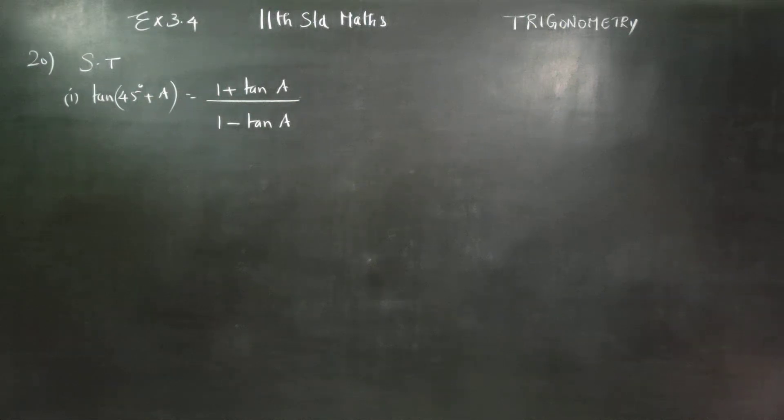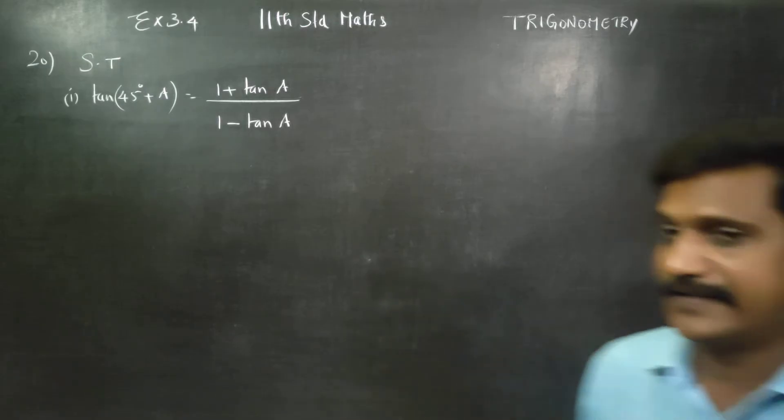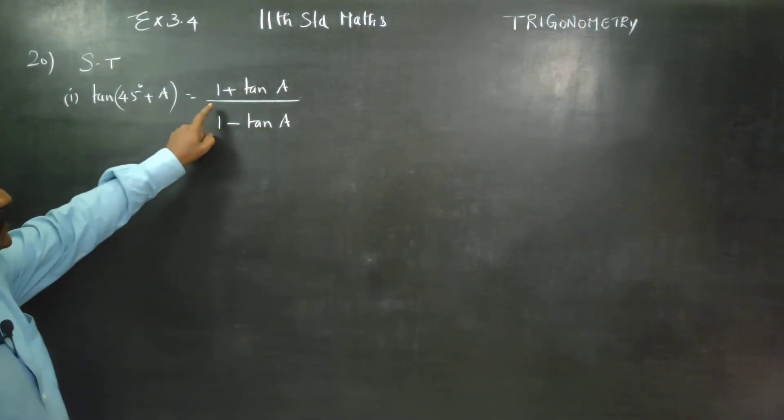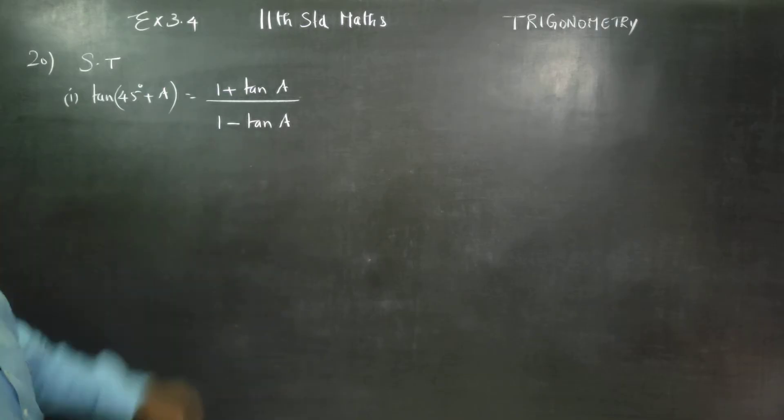Dear 11th standard students, this is Metro Karanagaran. In exercise number 3.4, sum number 20, show that tan 45 degree plus A is equal to 1 plus tan A by 1 minus tan A.